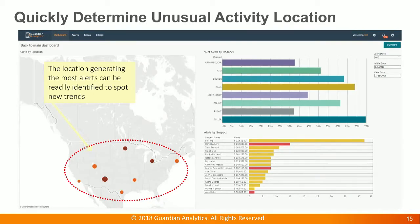Now let's take a look at the detail of the alert. Here I can see exactly where all the potential unusual transactions are triggering in the alerts. It's helpful to spot new trends and potential weaknesses in certain branches. In this example it shows the US only, but the map can show worldwide. Additionally, on the bottom right, you can see the number of occurrences and the value for each suspect generating alerts, as well as the channels from which those alerts are being generated.